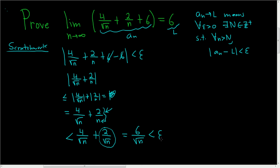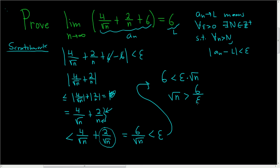We want 6 over the square root of n to be less than epsilon. Let's solve this for n. So 6 is less than epsilon times the square root of n. Dividing by epsilon, we get the square root of n greater than 6 over epsilon. Squaring both sides, we have little n bigger than (6/epsilon) squared. So this inequality is going to be true — our proof will be valid if little n is bigger than this. So we need to find a positive integer, capital N, to work within our proof.